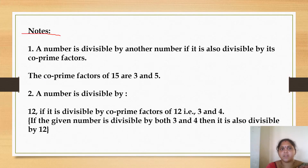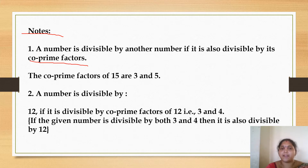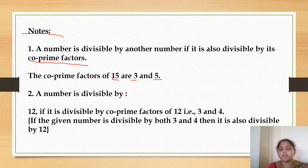Children, general notes for us: a number is divisible by another number if it is also divisible by its co-prime factors. Co-prime factors means numbers which have only 1 as their common multiple. So the co-prime factors of 15 are 3 and 5, because 3 and 5 have only one common multiple, that is 1.